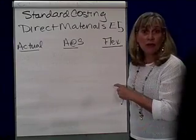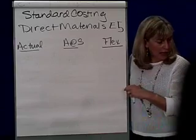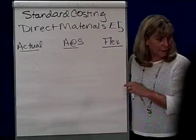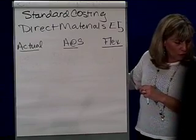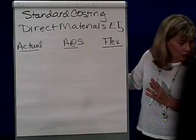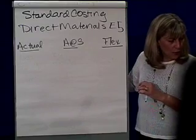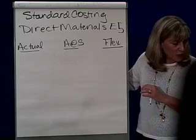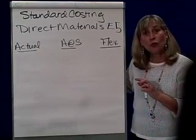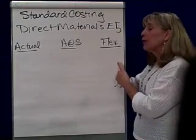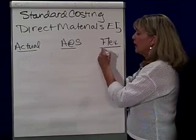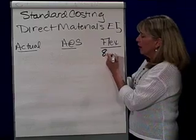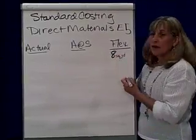We're going to use exercise five as an example. In here, we are carpeting elevators. It says we manufacture elevators that carry ten people. One of the direct materials used is heavy duty carpeting, and each elevator should use eight square yards of carpeting. So when we do our flexible budget, each elevator should only have eight square yards of carpeting in it.